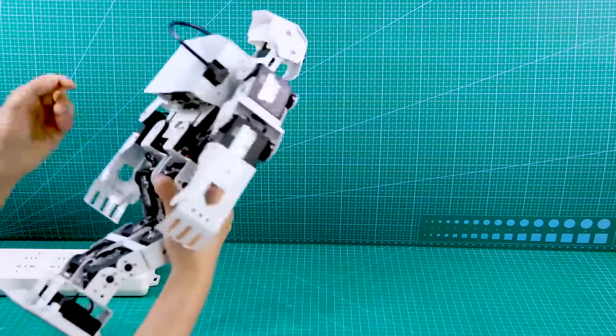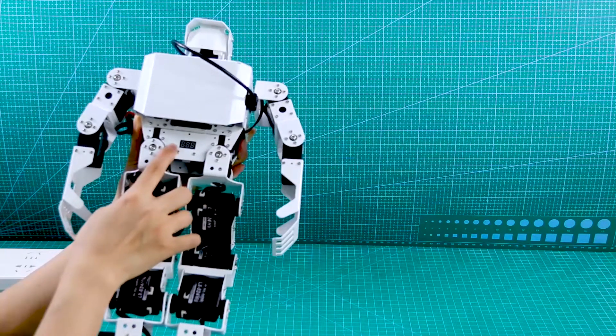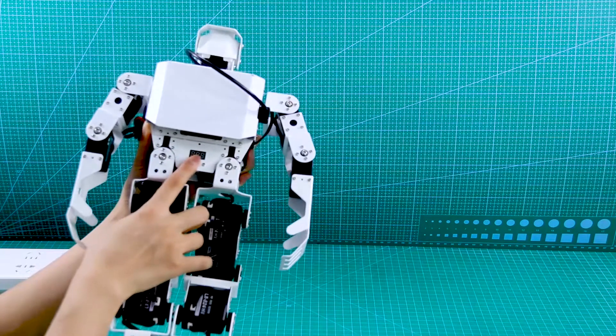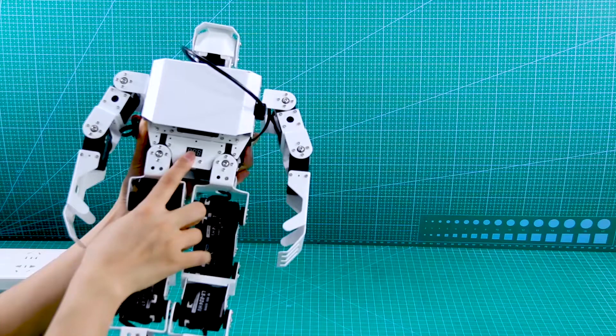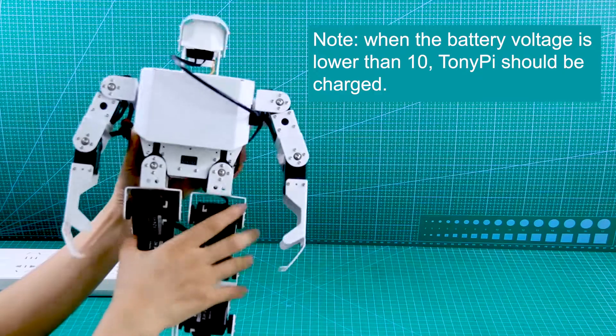We can notice there is a voltage display module on the back of TonyPi, which can display current battery power. For better experience, when the battery voltage is lower than 10, TonyPi should be charged.